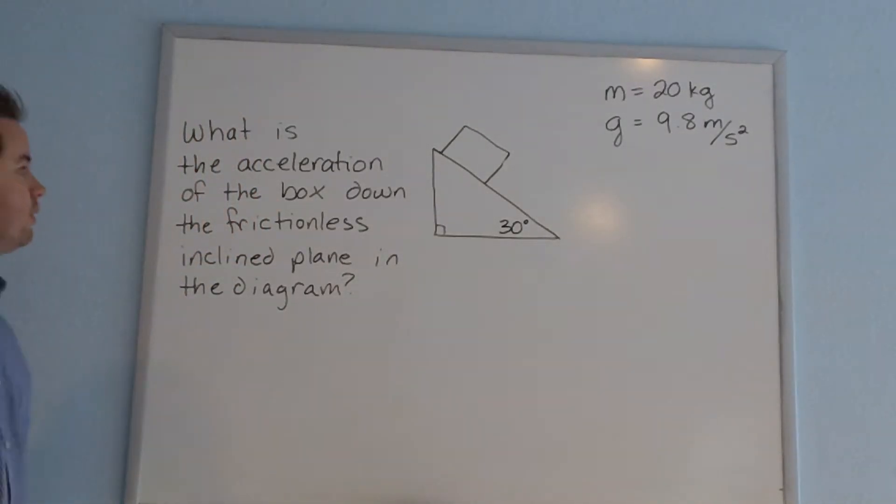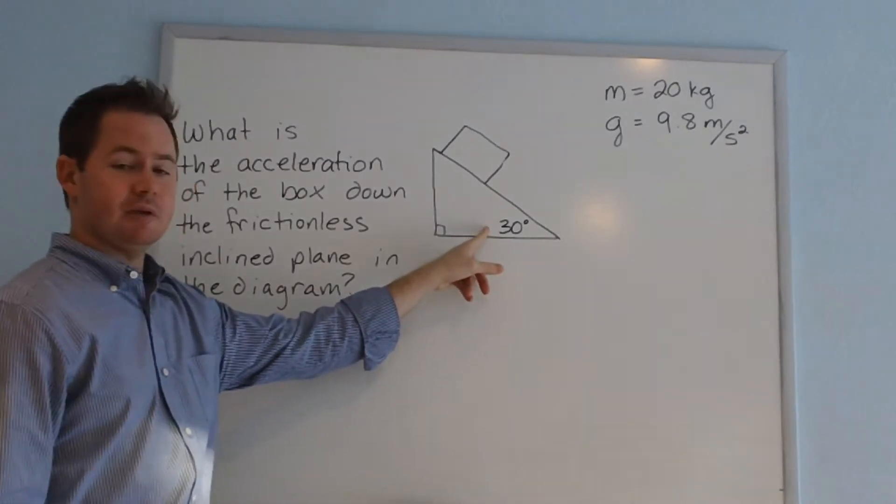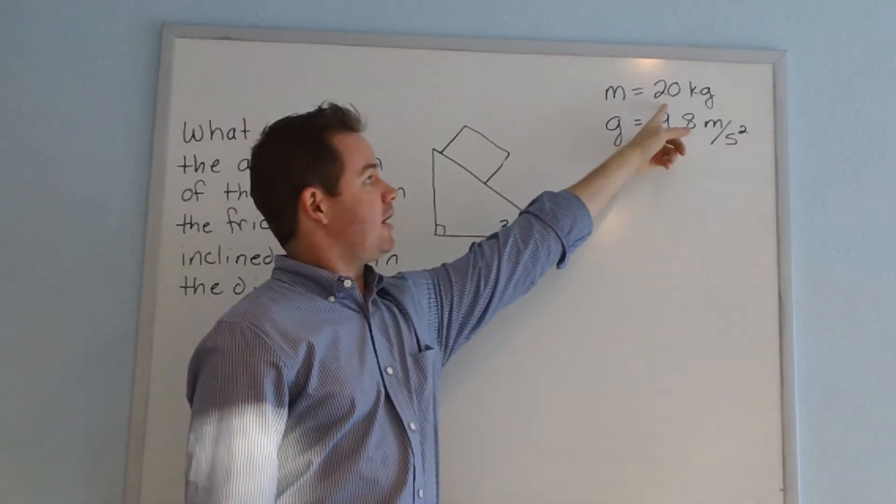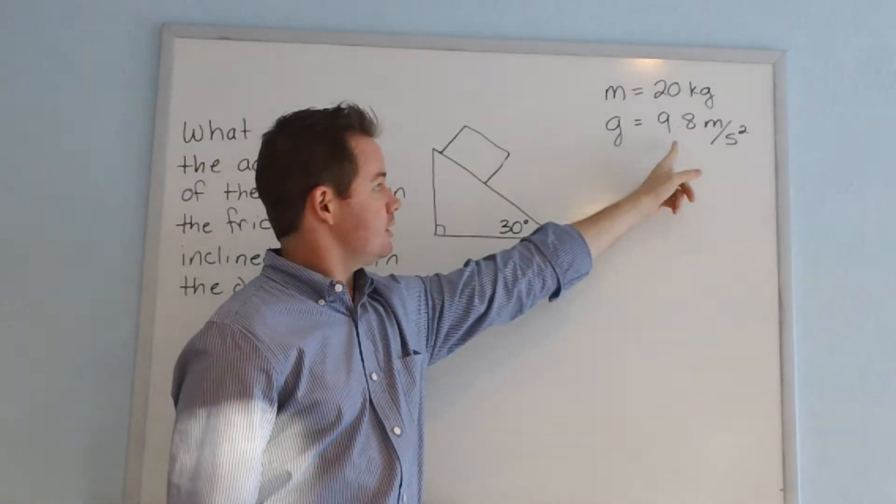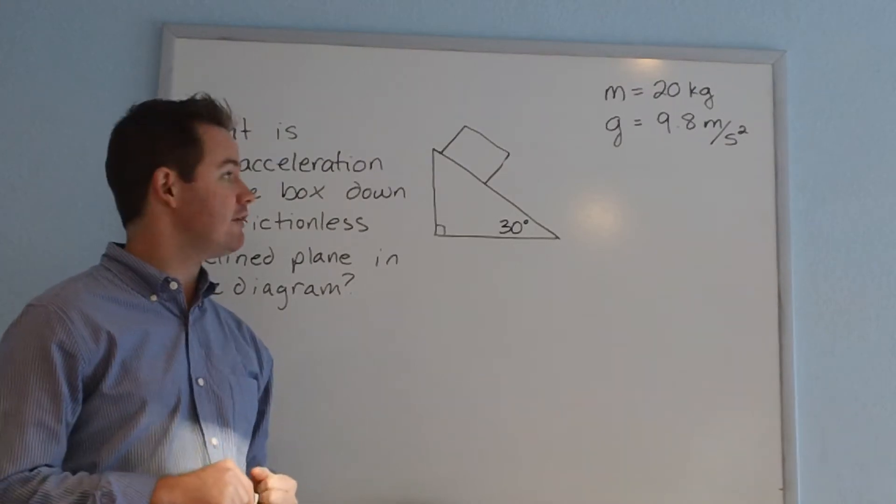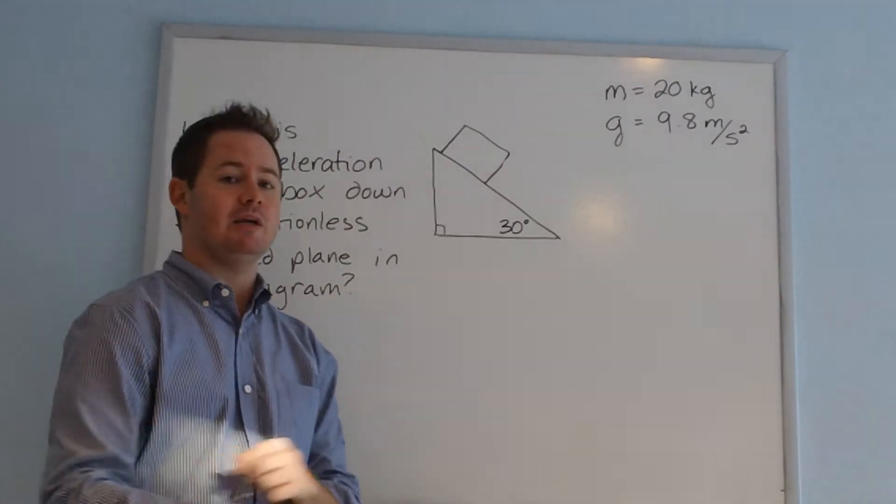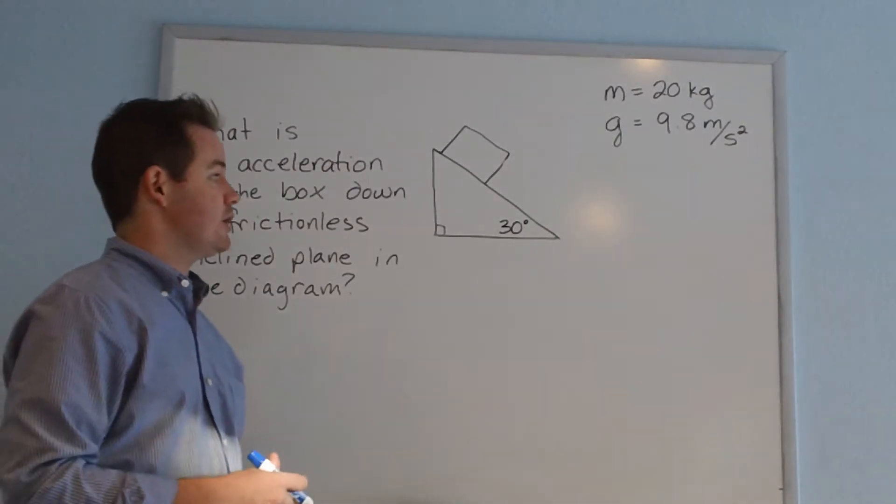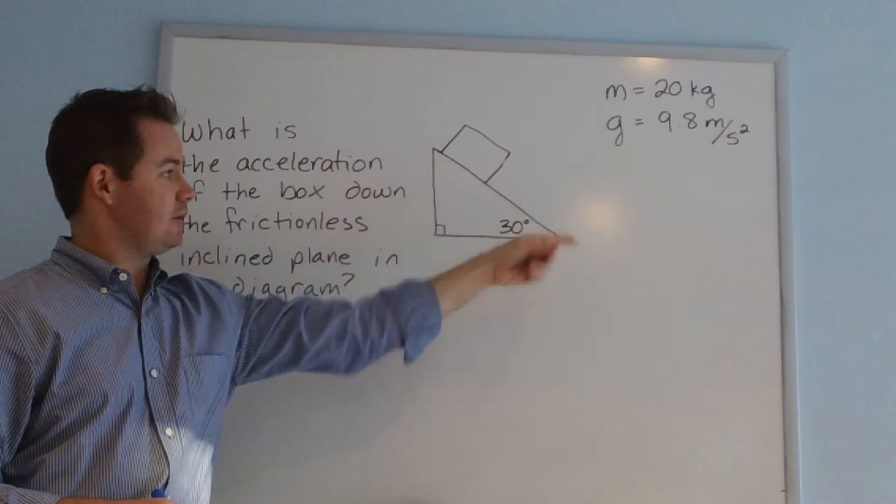So here we're asked, what is the acceleration of the box down the frictionless inclined plane in the diagram? We see an inclined plane at 30 degrees to the horizontal, a box with a mass of 20 kilograms, and our value of g, acceleration due to gravity, which is always a constant 9.8 meters per second squared. So let's see what we have to calculate in order to figure out the acceleration of this box down the plane.